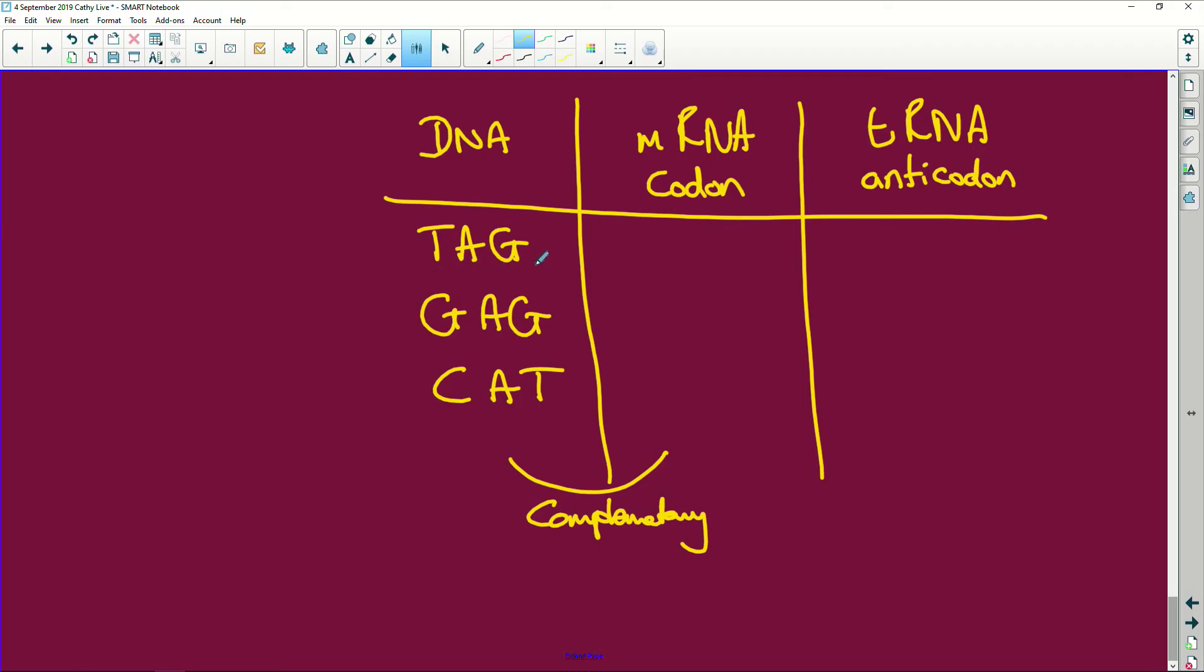So the messenger RNA codon is now going to code and it's going to be complementary. So the DNA and the messenger RNA are complementary. So TAG is going to be A, but remember with RNA there is adenine to uracil and cytosine to guanine. So it will be A, but instead of T we are not going to have T, we're going to have U. And G to C, G to C, A to U, and G to C.